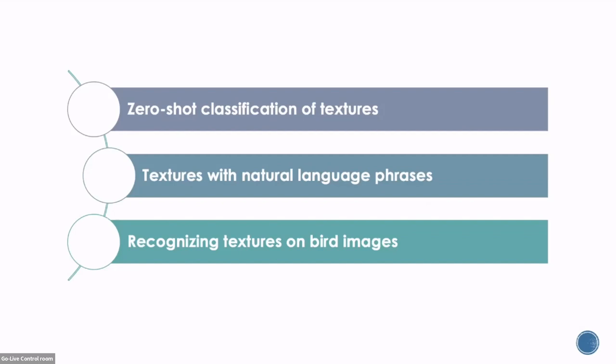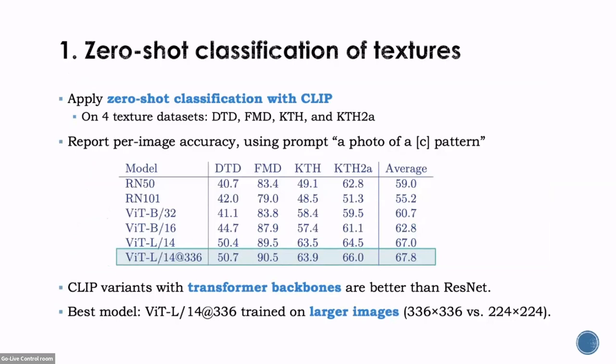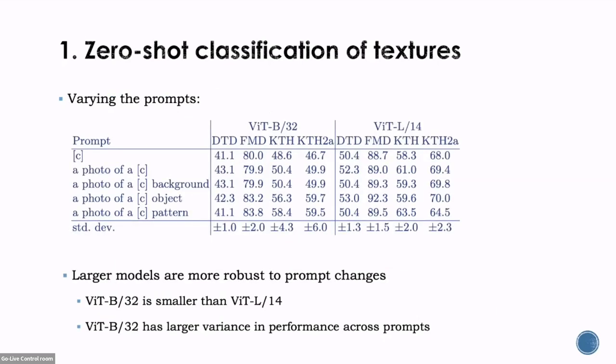We present our analysis in three parts: zero-shot classification of textures, associating textures with natural language phrases, and recognizing textures on bird images. For the first part, we apply zero-shot classification with CLIP on four texture classification datasets. We report per-image accuracy on different variants of CLIP, and we can see that variants with transformer backbones are better than ResNet backbones. The best model is trained on larger images. We also experimented with different prompts and find that larger models are more robust to prompt changes.